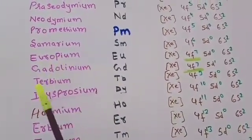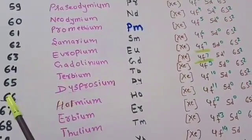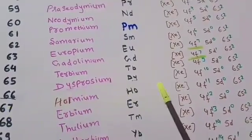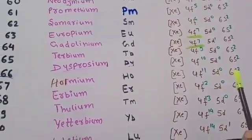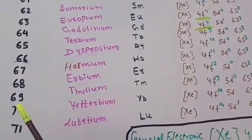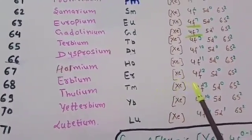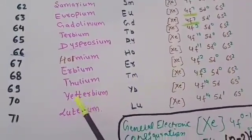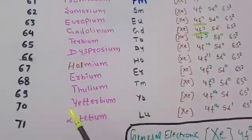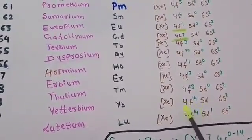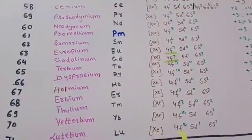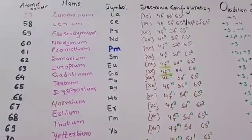Terbium (65): [Xe] 4f⁹ 5d⁰ 6s². Dysprosium (66): [Xe] 4f¹⁰ 5d⁰ 6s². Holmium (67): [Xe] 4f¹¹ 5d⁰ 6s². Erbium (68): [Xe] 4f¹² 5d⁰ 6s². Thulium (69): [Xe] 4f¹³ 5d⁰ 6s². Ytterbium (70): [Xe] 4f¹⁴ 5d⁰ 6s² — note that ytterbium has the fully filled 4f subshell, giving it extra stability. Lutetium (71): [Xe] 4f¹⁴ 5d¹ 6s².